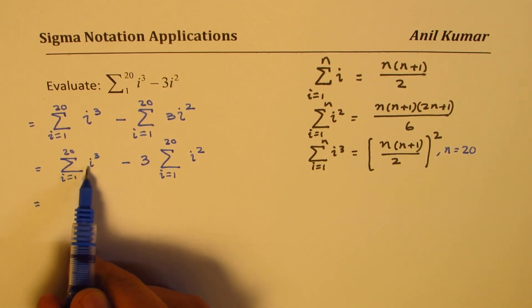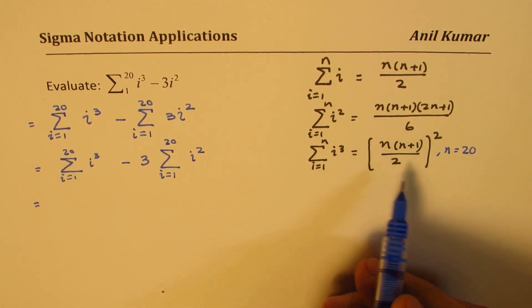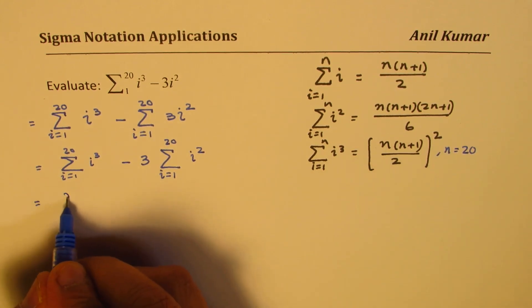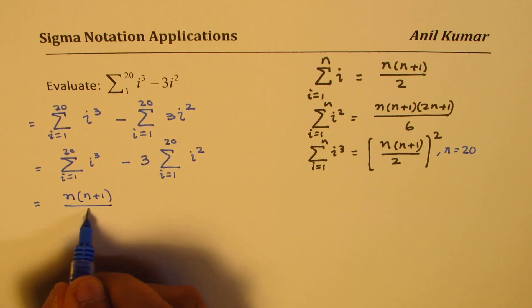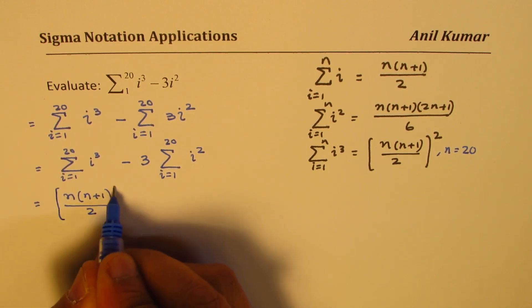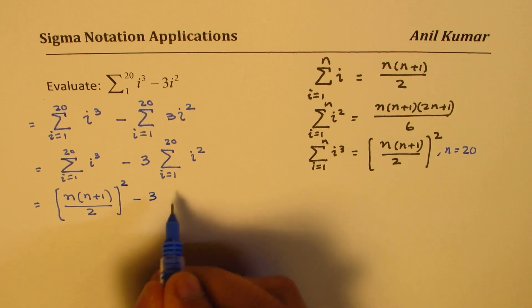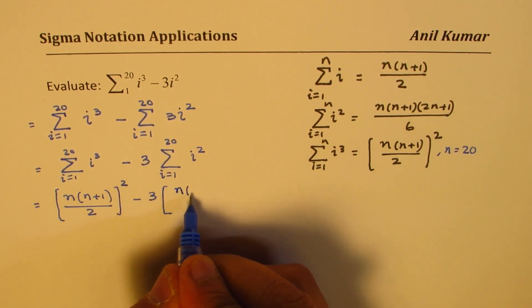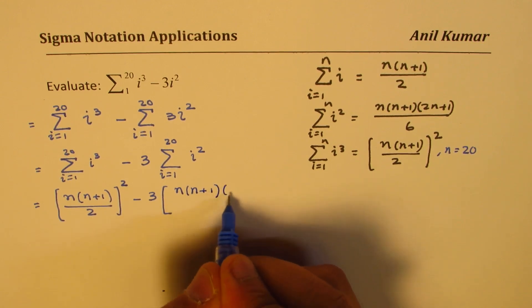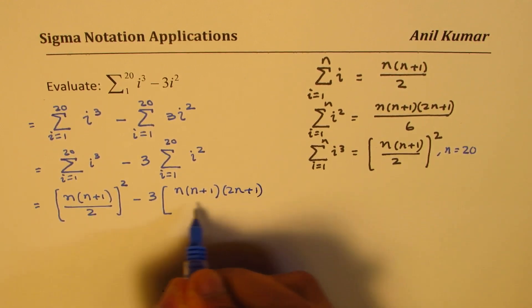Now, sum of cubes is all this. So we can write all this, which is n times n plus 1 over 2 whole square minus 3 times sum of squares is all this, which is n times n plus 1 times 2n plus 1 divided by 6.